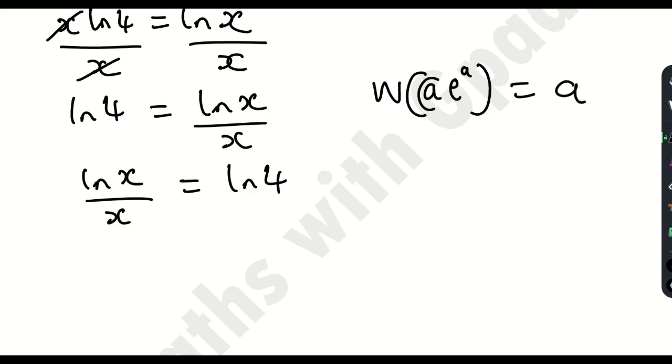Look at this. a here as the coefficient of e and as the power. When you apply the Lambert W function, you are going to have a as a result of that. So we are going to try to find a way of representing this like this.